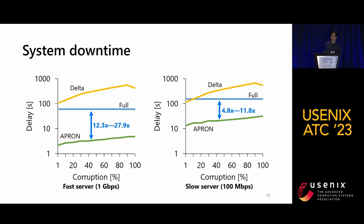First, we evaluate system downtime due to recovery according to the corruption ratio and network performance. When using the fast network server, the system downtime of APRON is 12.3 to 27.9 times shorter than that of full recovery. APRON is especially better than full recovery when the corruption ratio is low, which is practical because normally even an attacker does not try to fully wipe out the entire system storage. When using the slow network server, the system downtime of APRON is 4.8 to 11.8 times shorter than that of full recovery. We also confirmed that delta recovery is always slower than both full recovery and APRON.